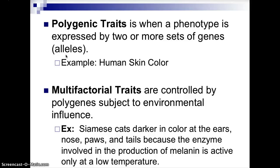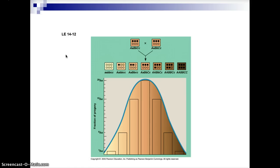Multifactorial traits are controlled by polygenes and are subject to environmental influence. An example is Siamese cats — they're darker in color at the ears, nose, paws, and tail. The enzyme involved in the production of melanin, which drives coloration, is active only at lower temperatures. So those extremities — ears, nose, paws, and tail — are at lower temperatures than around the body. Here you can see the fraction of progeny and the different allelic forms and genes for skin coloration.